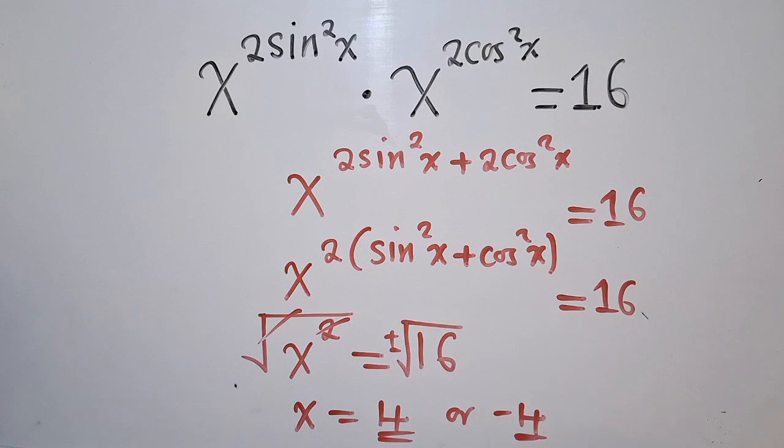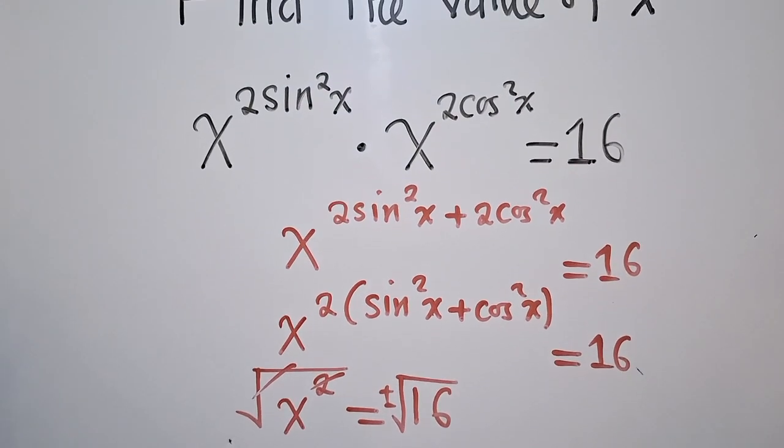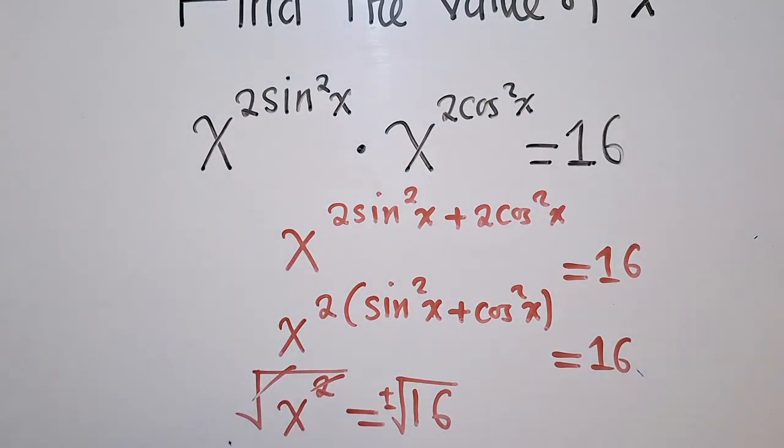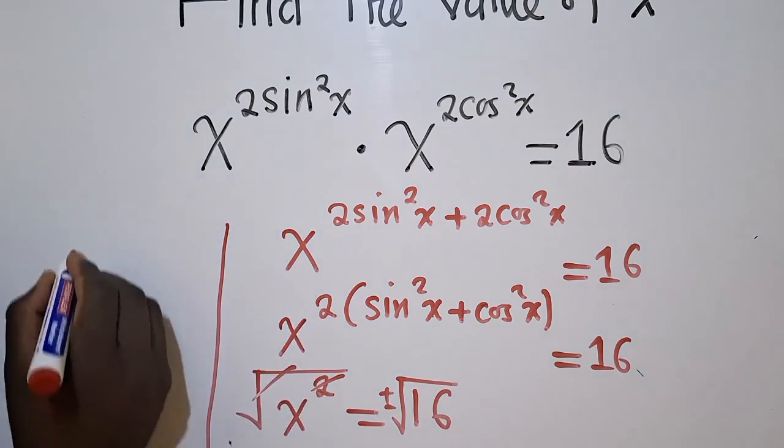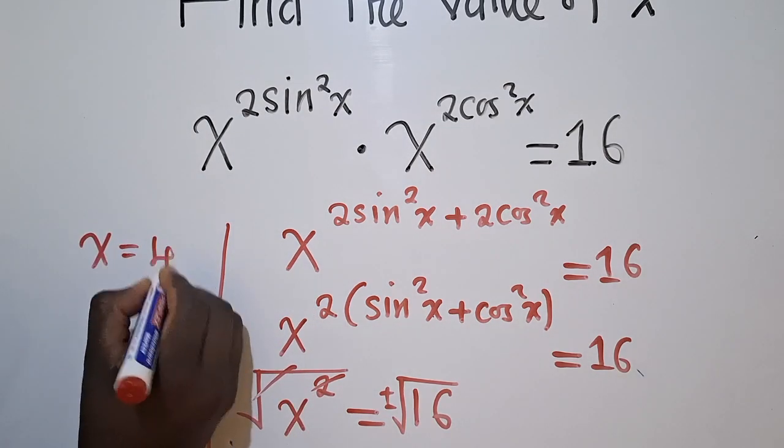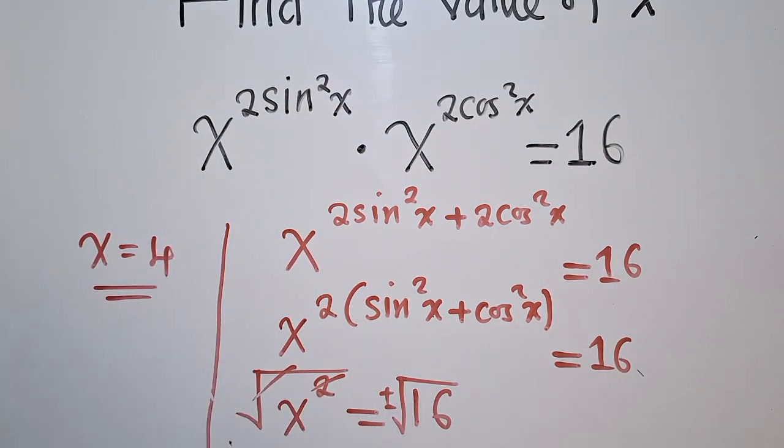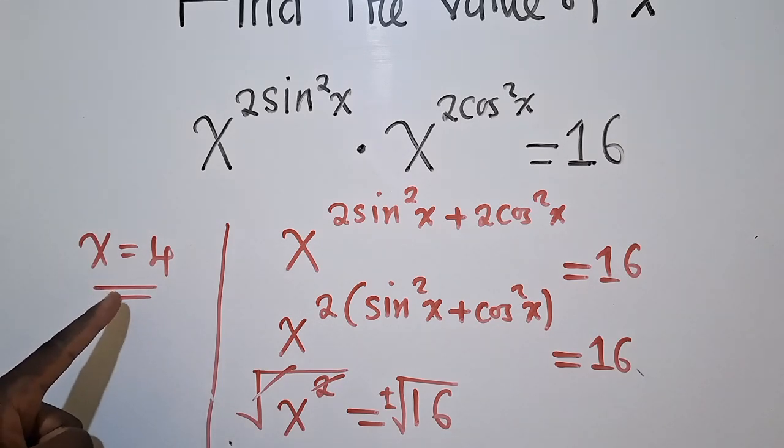Now looking at the nature of the exponential equation we have here, we're just going to say the value of X is just 4, positive 4. For the negative, it won't satisfy the equation here. So we just go with this one. X is equal to positive 4.